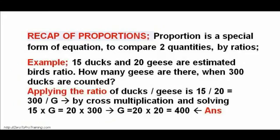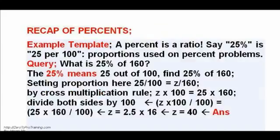Recap of proportions. These are built from ratios and compare two measures. Their cross multiplications are identical. The ratio of A to B and B to A are inverses. See image.